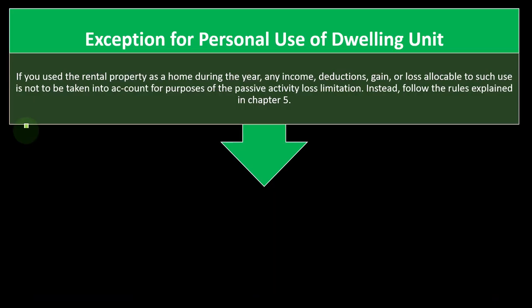Exception for personal use of a dwelling unit: the most clean-cut situation is where there is no personal use and you have a separation of business and personal property. If you use the rental property as a home during the year, any income, deductions, gain, or loss allocable to such use is not to be taken into account for purposes of the passive activity loss limitation. Instead, follow the rules explained in Chapter 5.